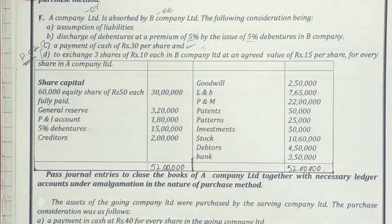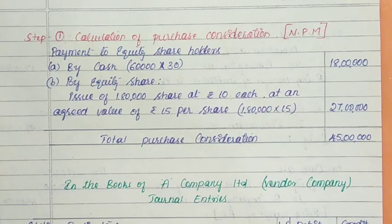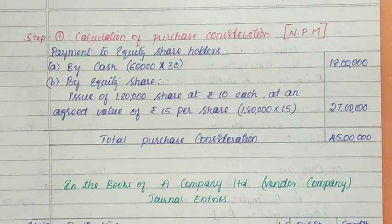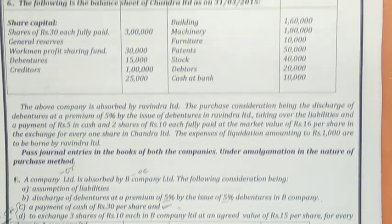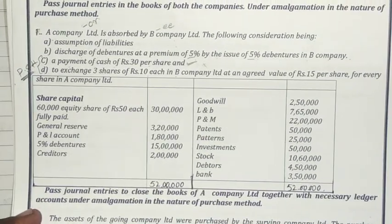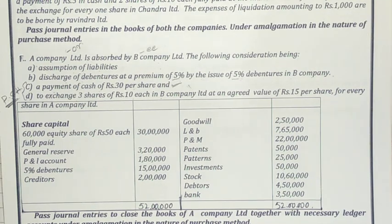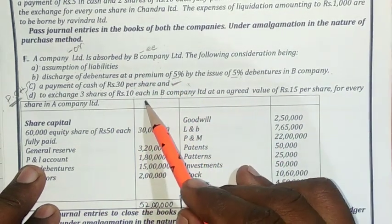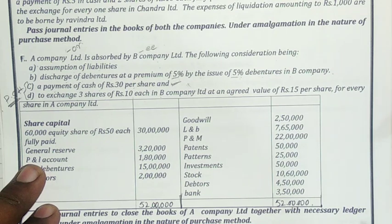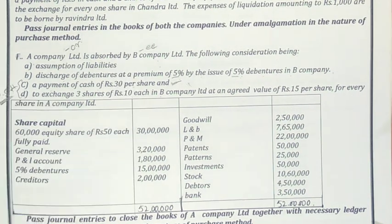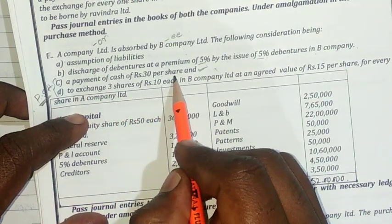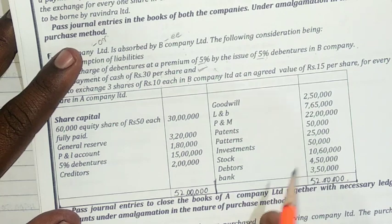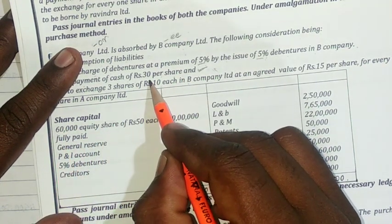This is the simplest and easiest problem. Step one: calculation of purchase consideration. It is under the net payment method, because here they have given how they are making payments to shareholders — in cash and in shares. So that is why the ratio of payment is given, hence it is the net payment method. They told: payment of cash of rupees 30 per share, meaning for each share they are paying 30 rupees.